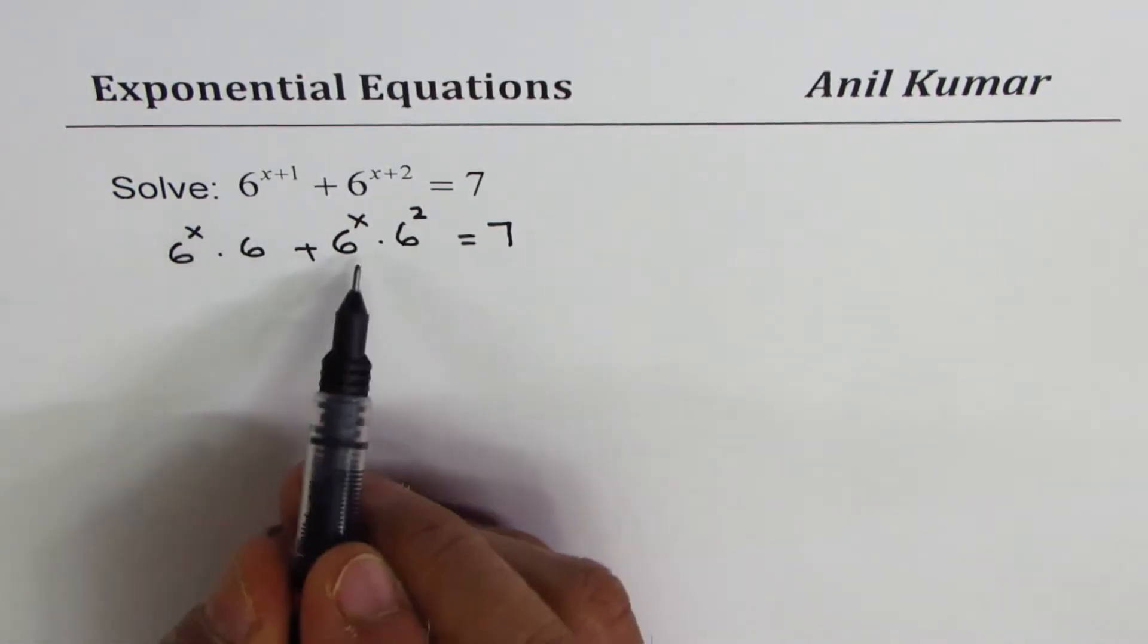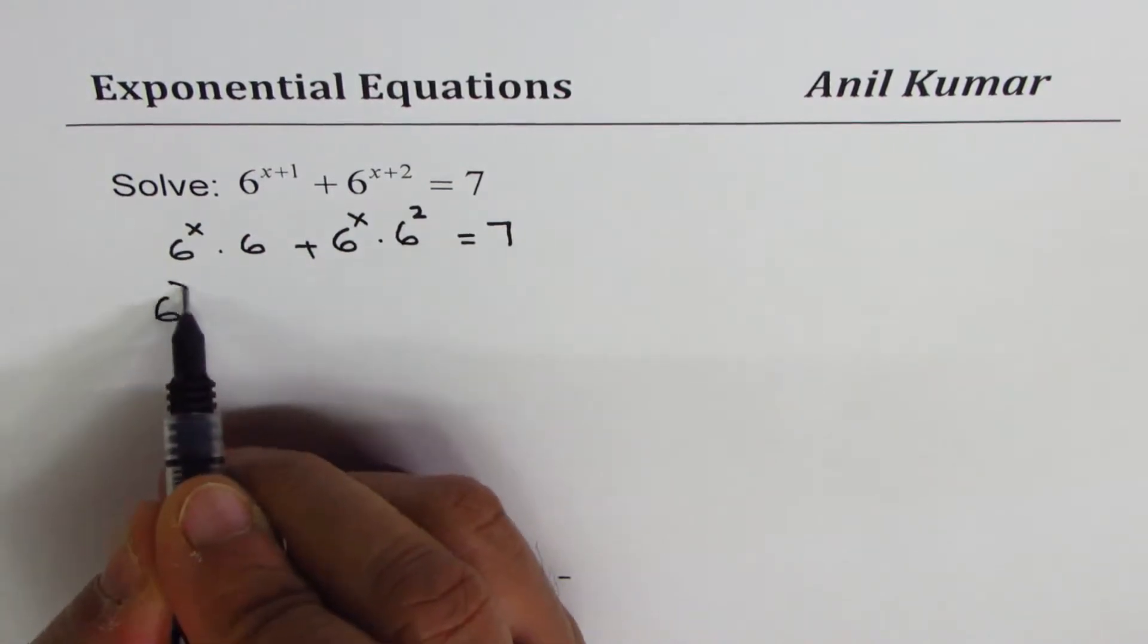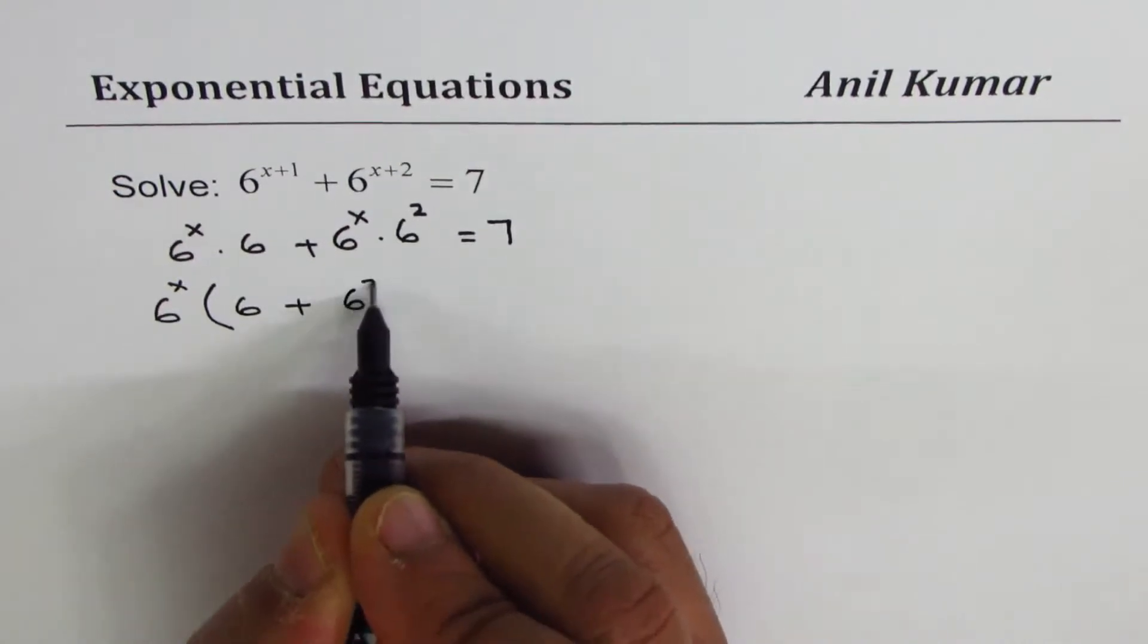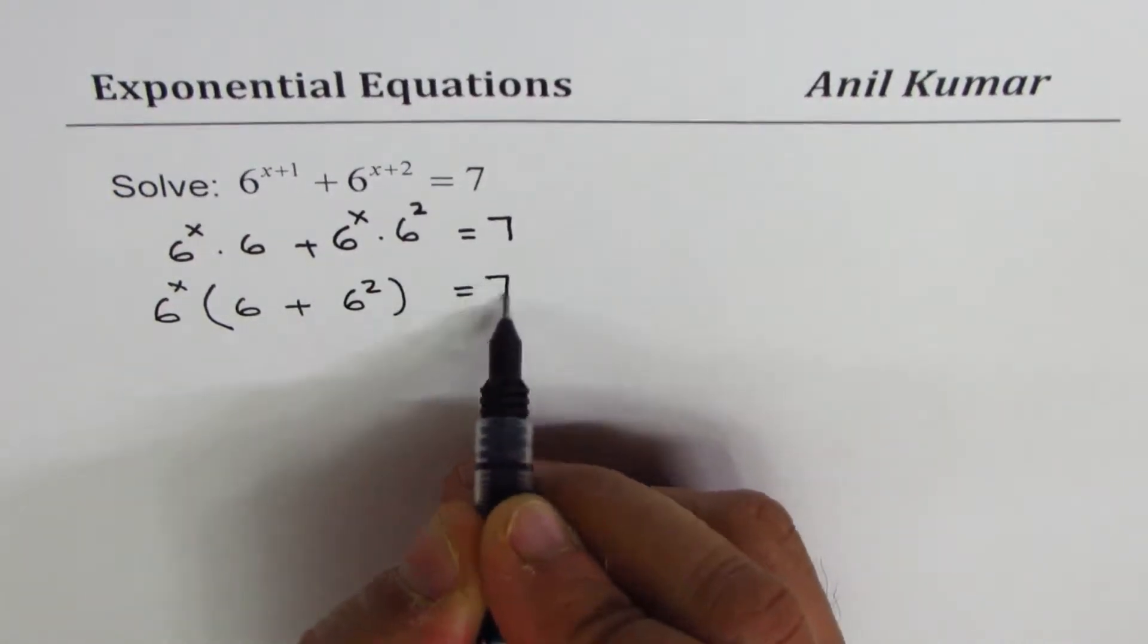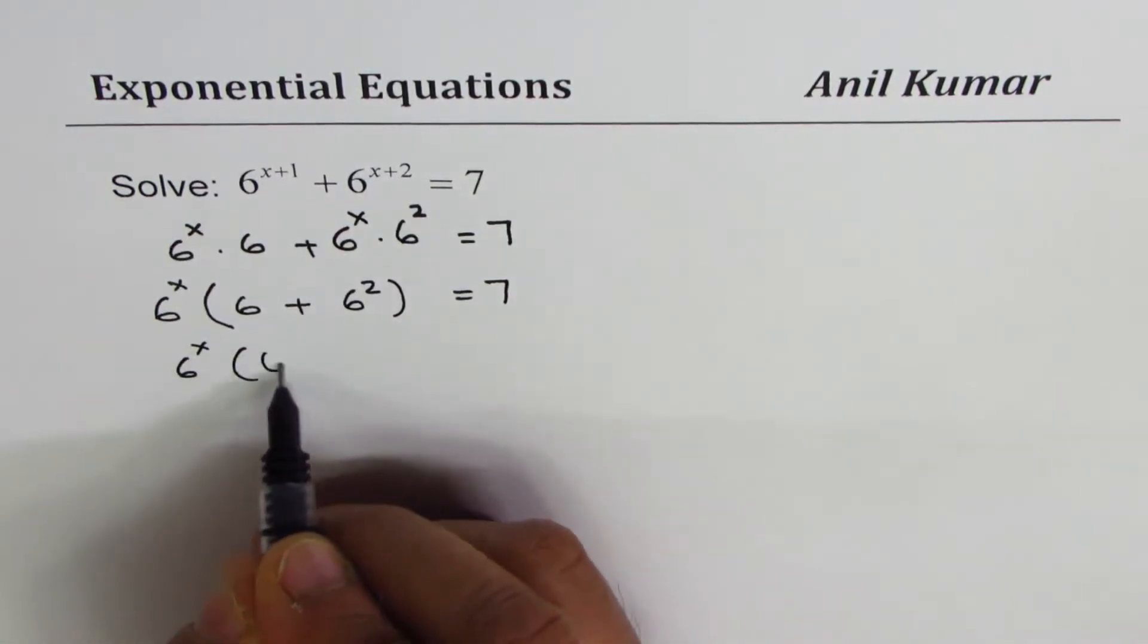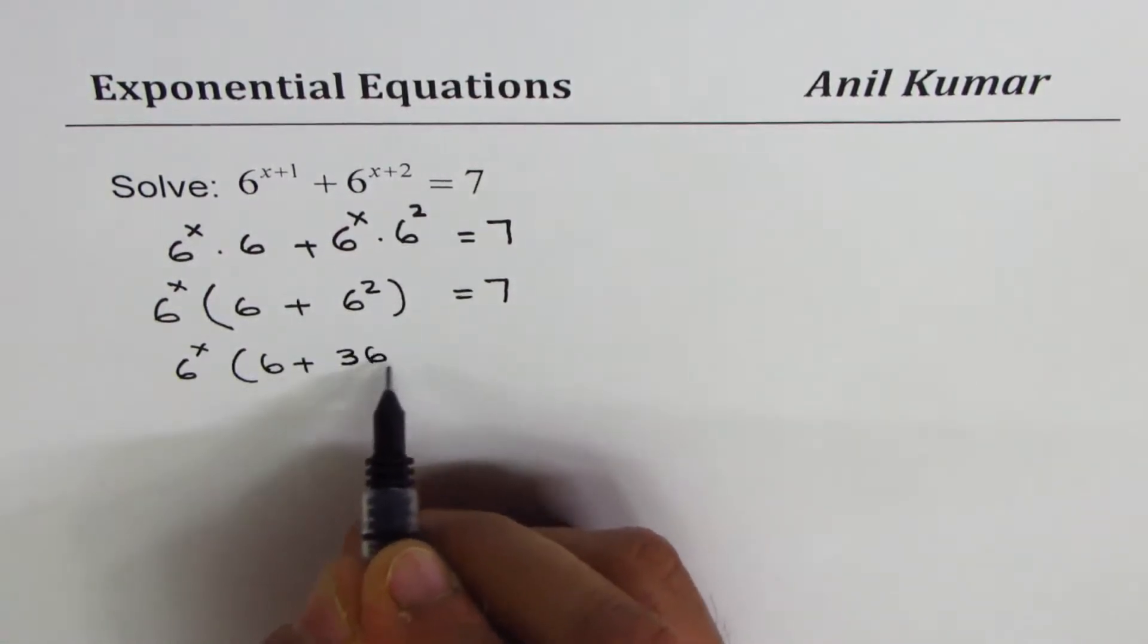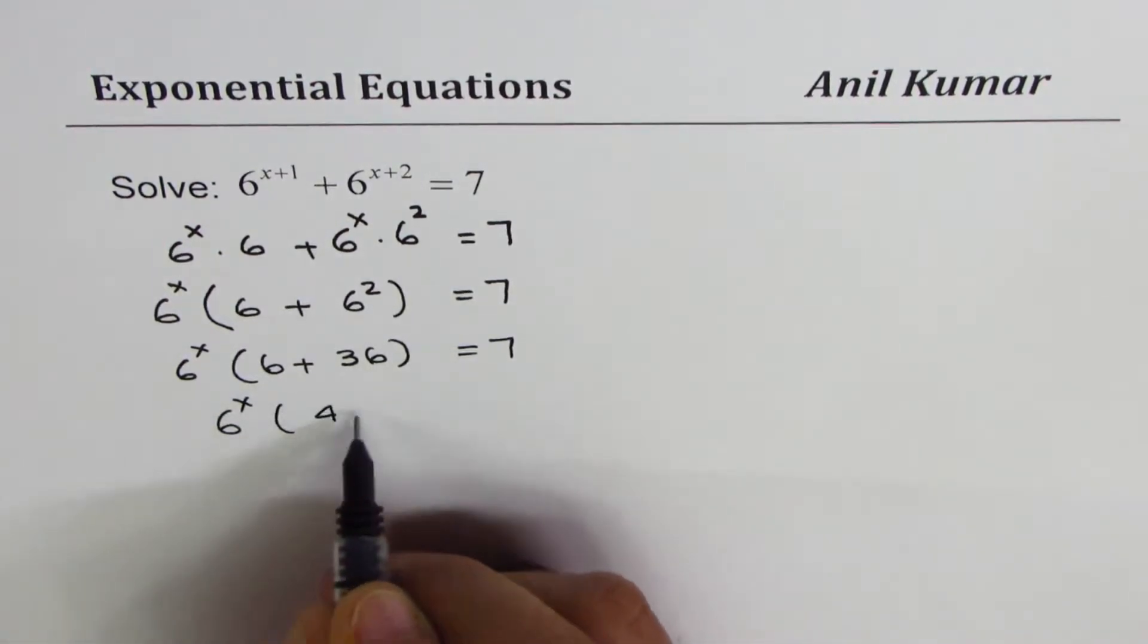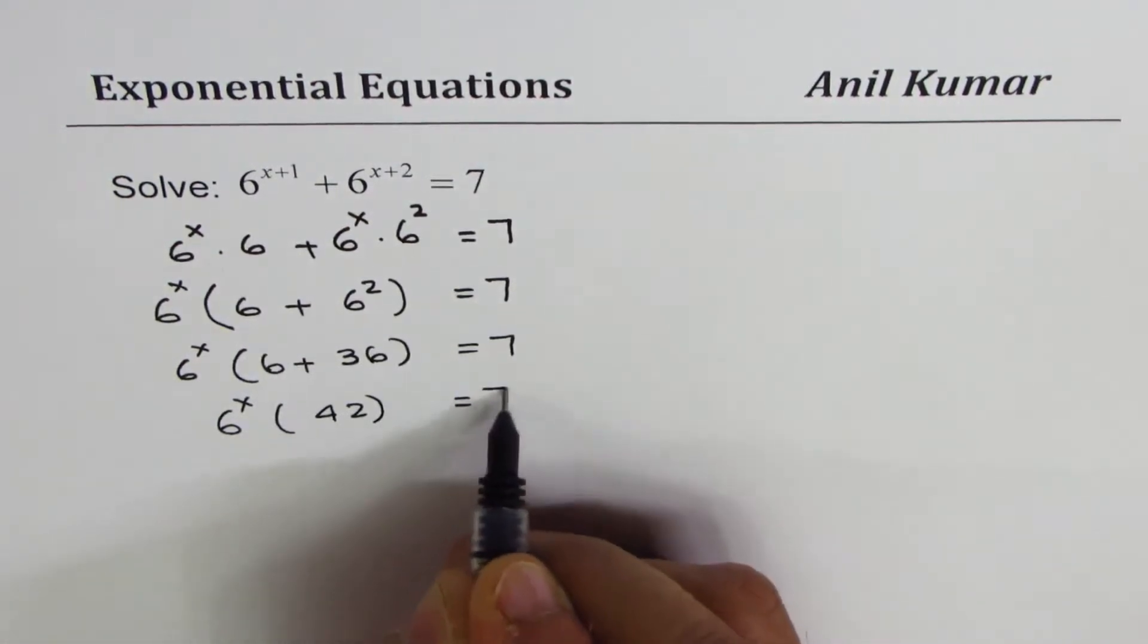Now, 6^x is common. If I factor out 6^x, I'm left with 6^x(6 + 6^2) = 7. Since 6 + 36 = 42, we have 6^x(42) = 7.